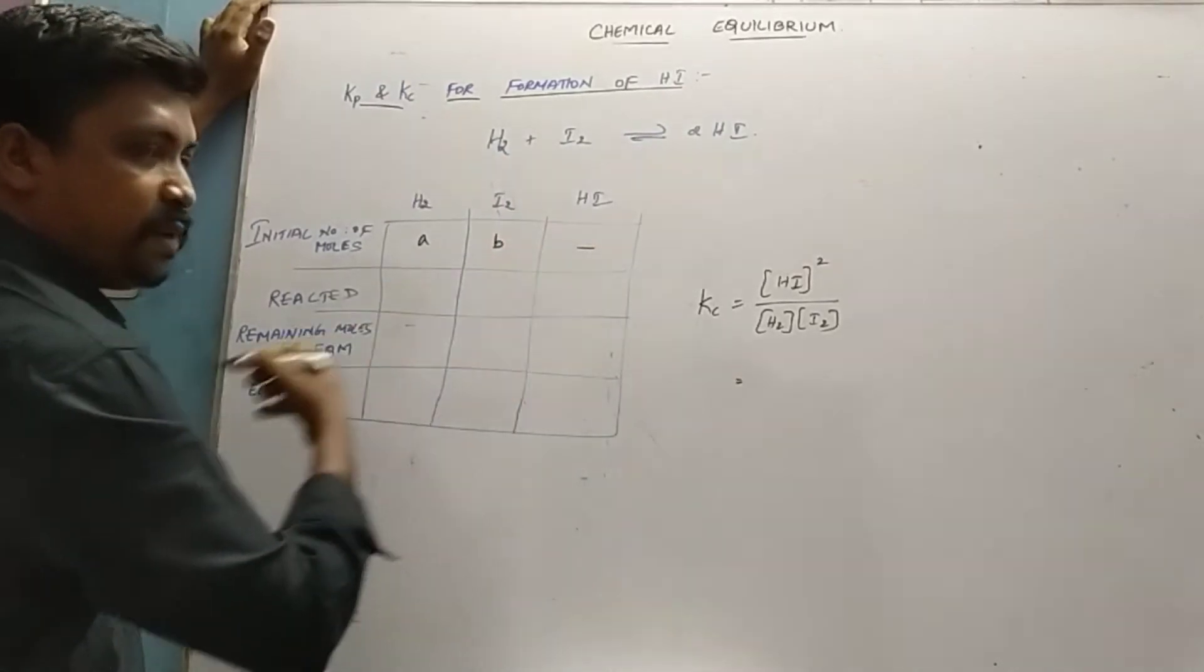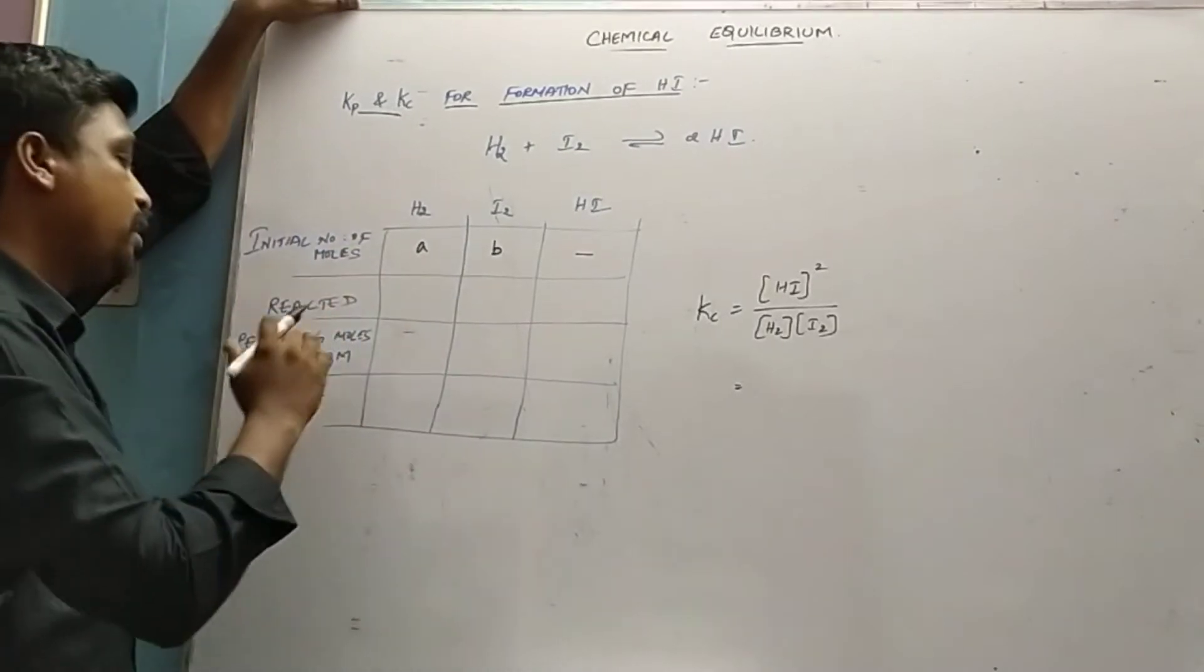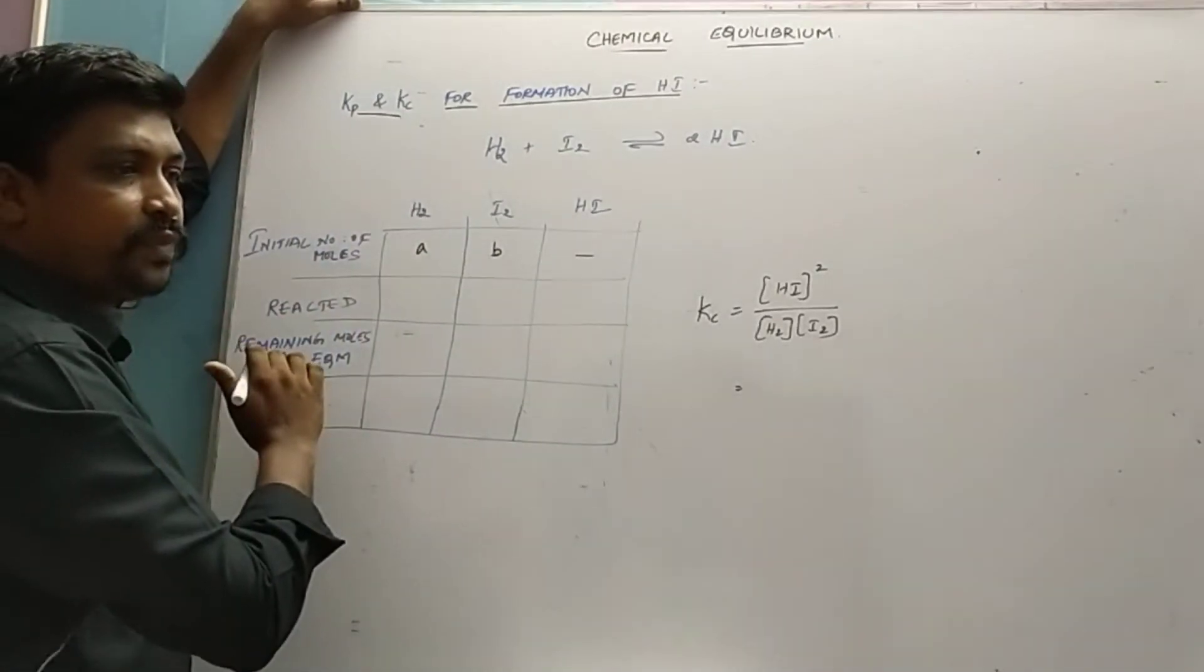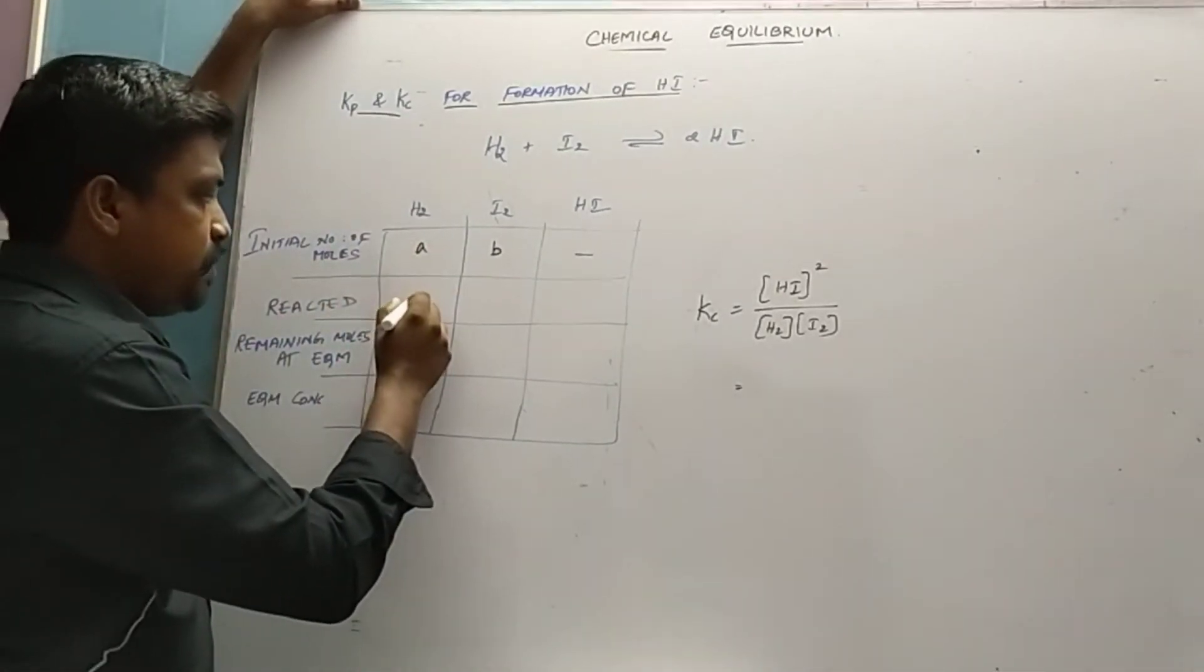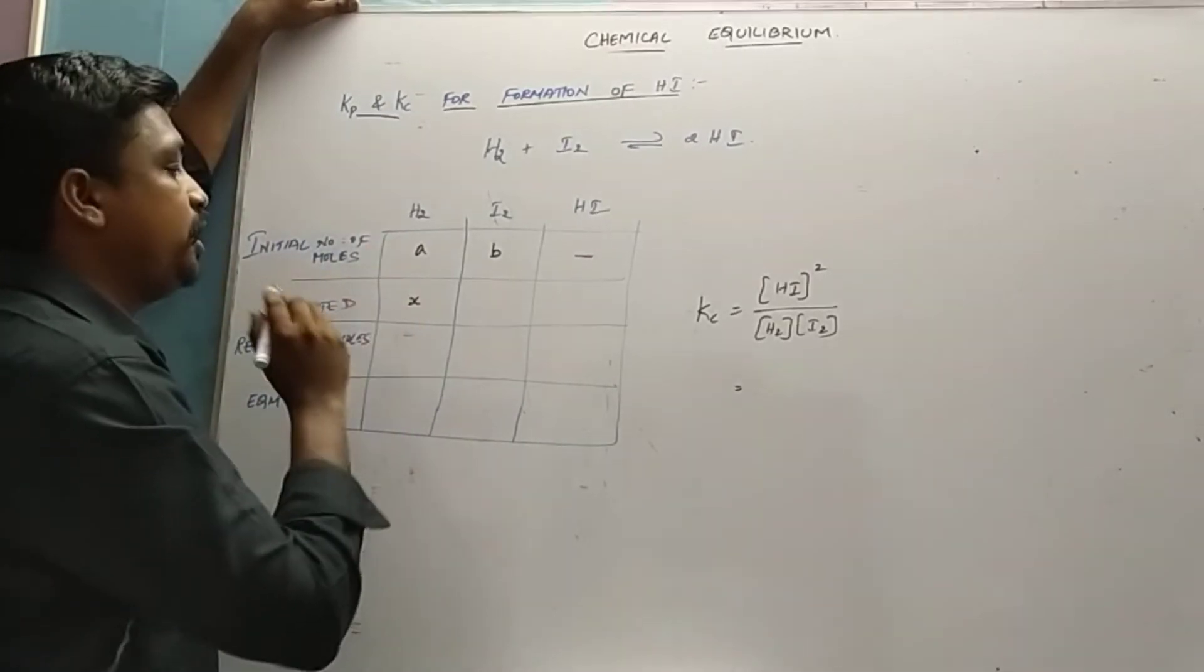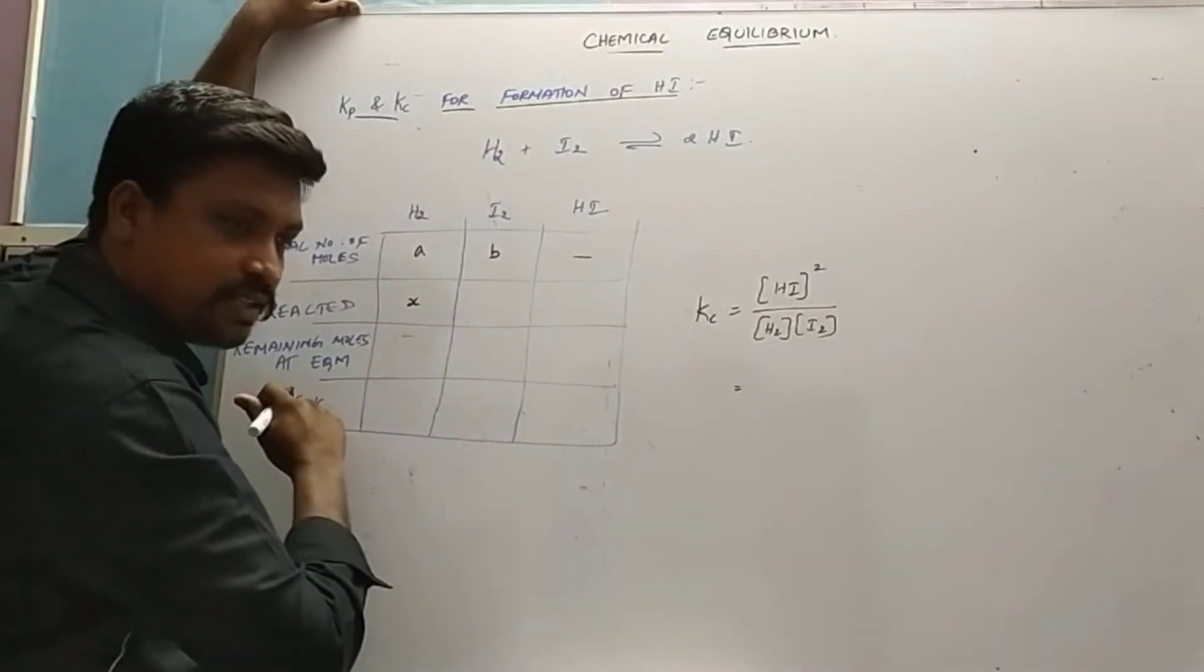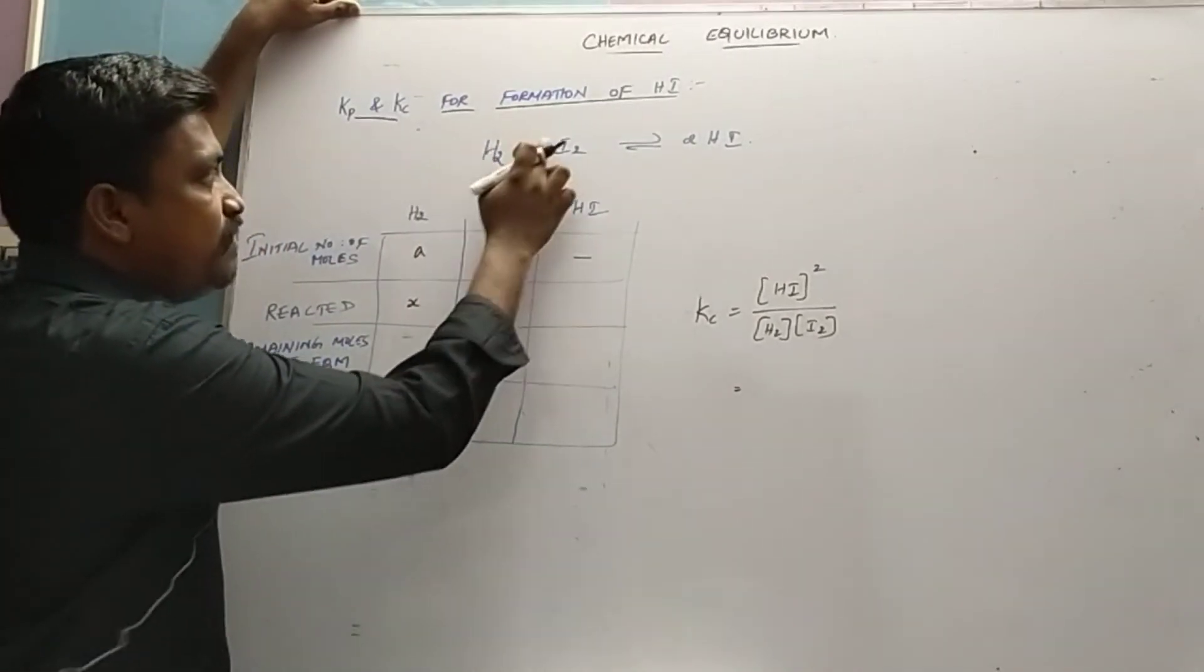HI will not be present initially because it is the product. How much reacted? Let it be x. X is called the degree of dissociation. X hydrogen will react with x iodine.